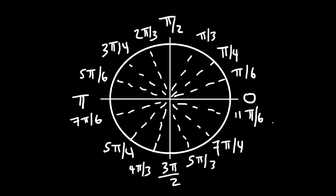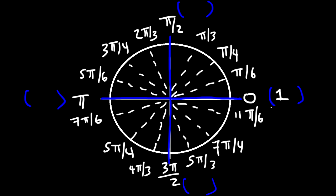Now we need to talk about the values that correspond to these angles. Let's focus on the values located on the x-axis and y-axis. On the x-axis to the right, x is 1 — the unit circle has a radius of 1. On the left side, x is negative 1. On the y-axis, x is always 0. For the y-values, y is 0 on the x-axis, positive 1 at the top, and negative 1 at the bottom.